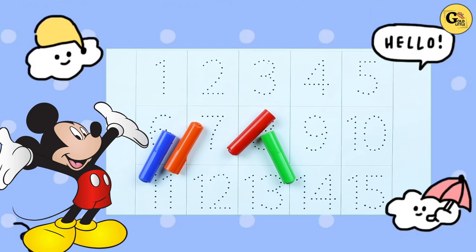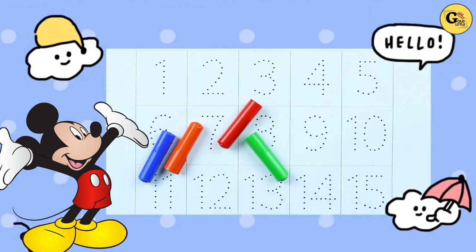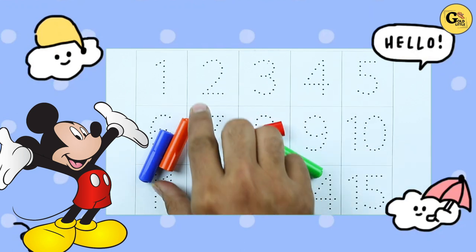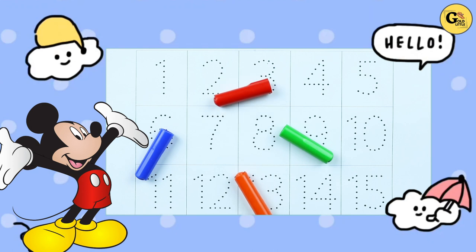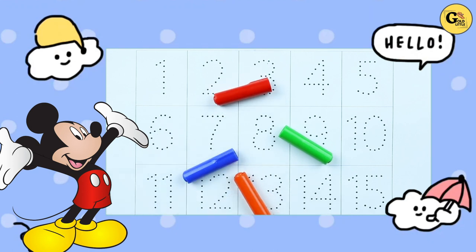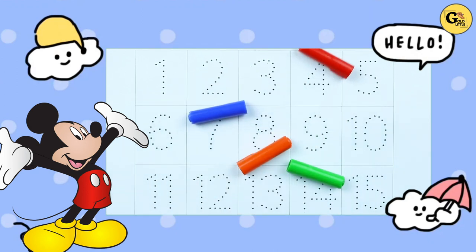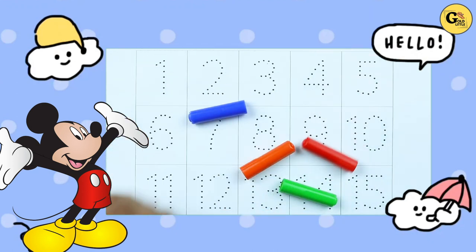Hello friends, today we will learn numbers 1 to 15 with some colors: green color, red color, orange color, blue color. Let's start.